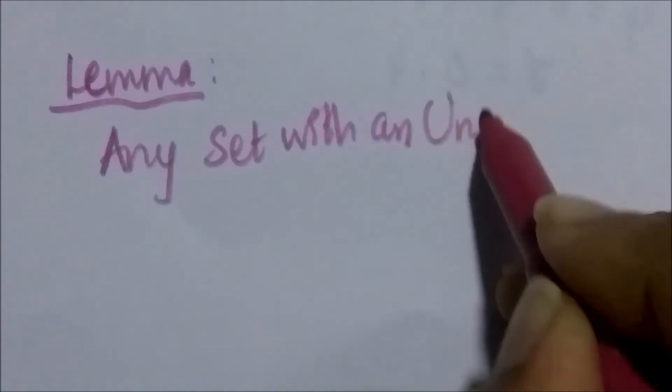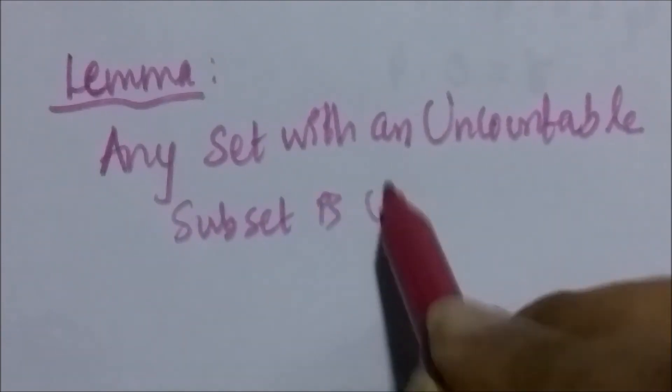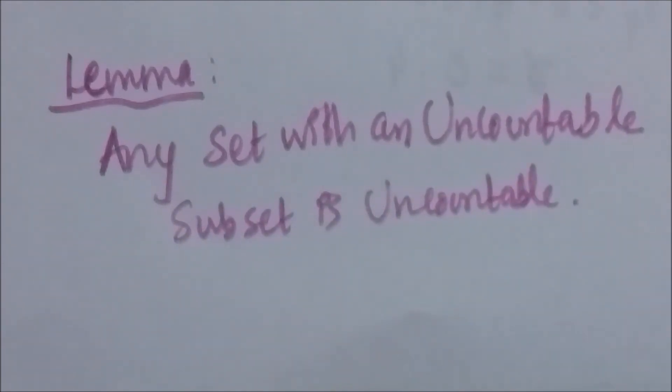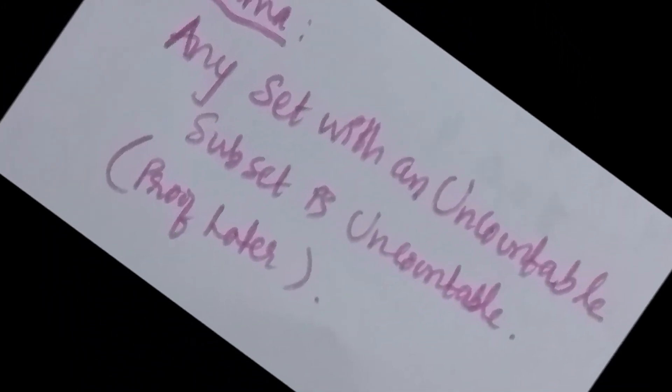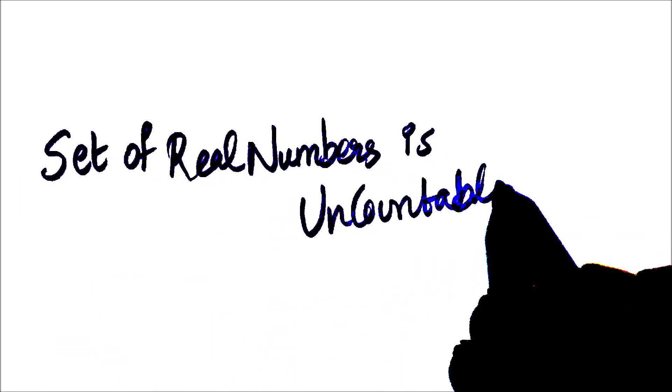Now look at the lemma which states that any set with an uncountable subset is an uncountable set — we will prove this in the next video. Since we have proved that the set of real numbers between 0 and 1 is uncountable, by making use of this lemma we can prove that the entire set of real numbers is uncountable.